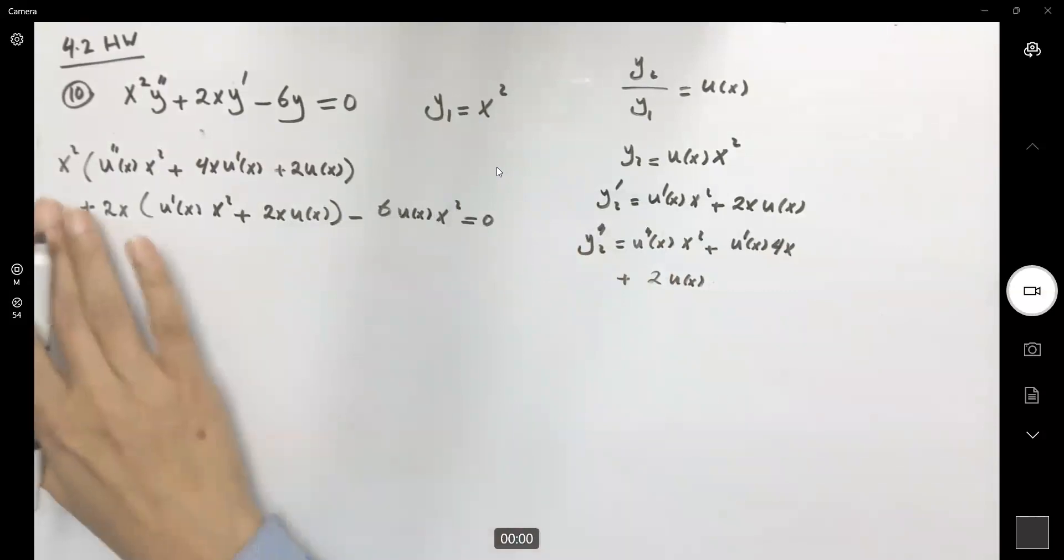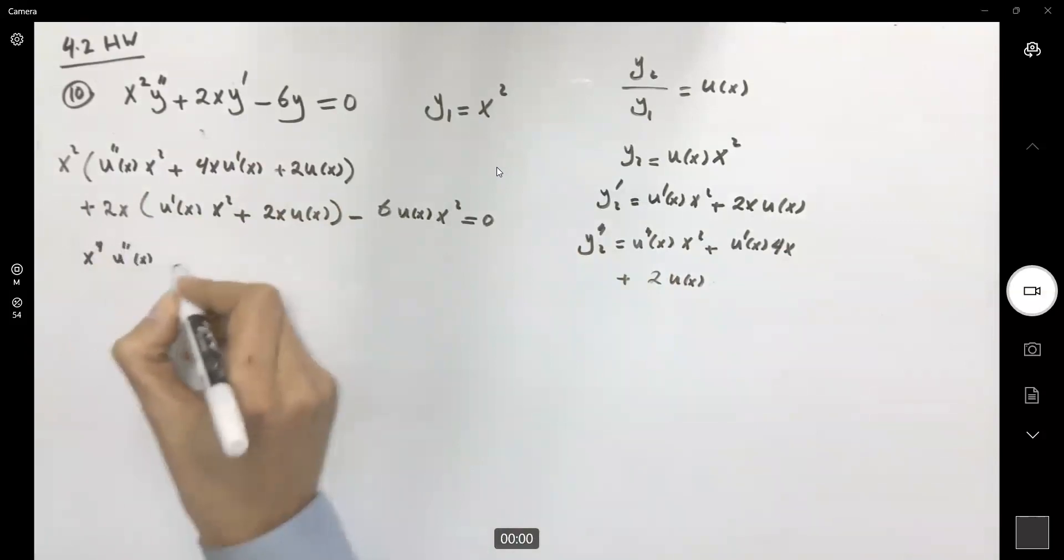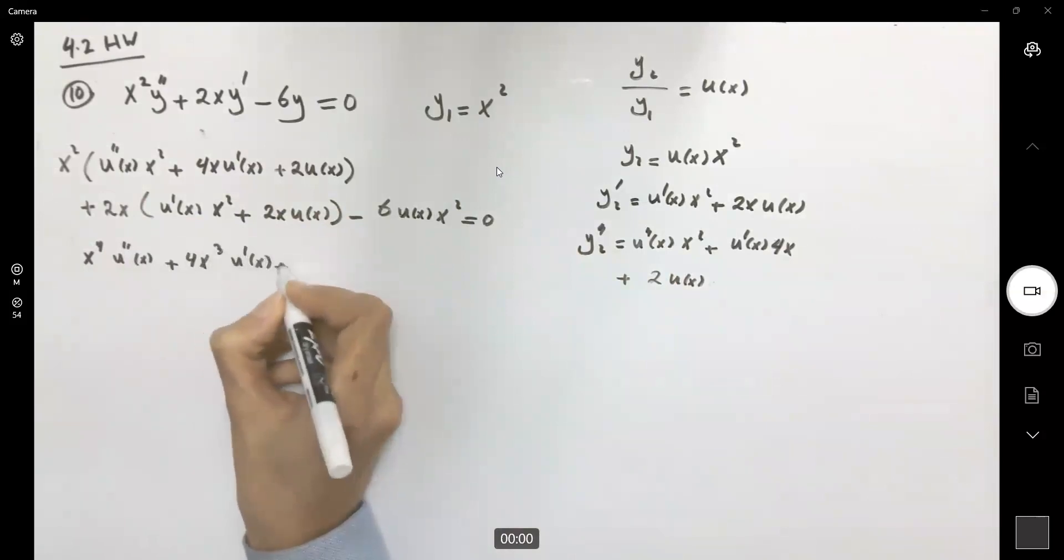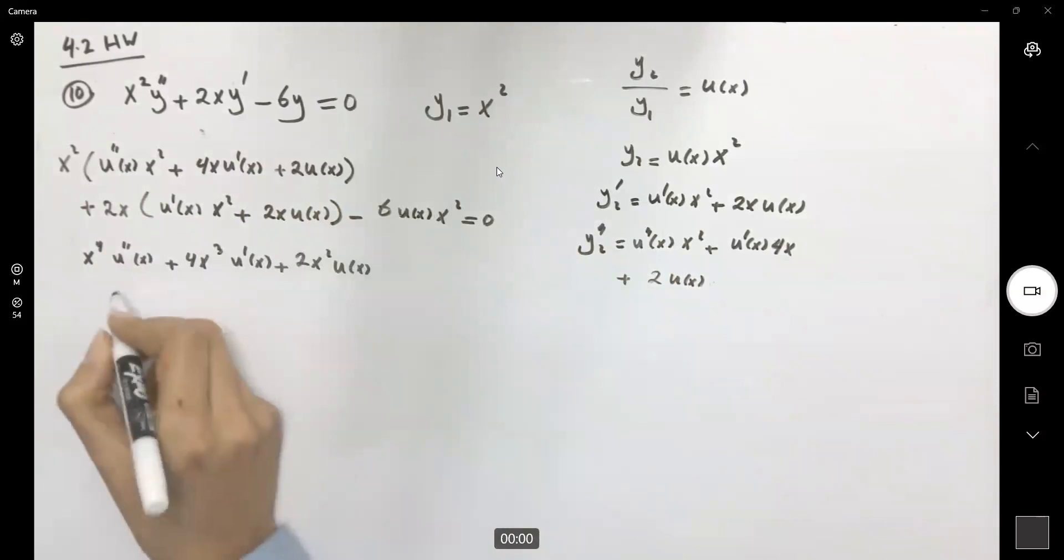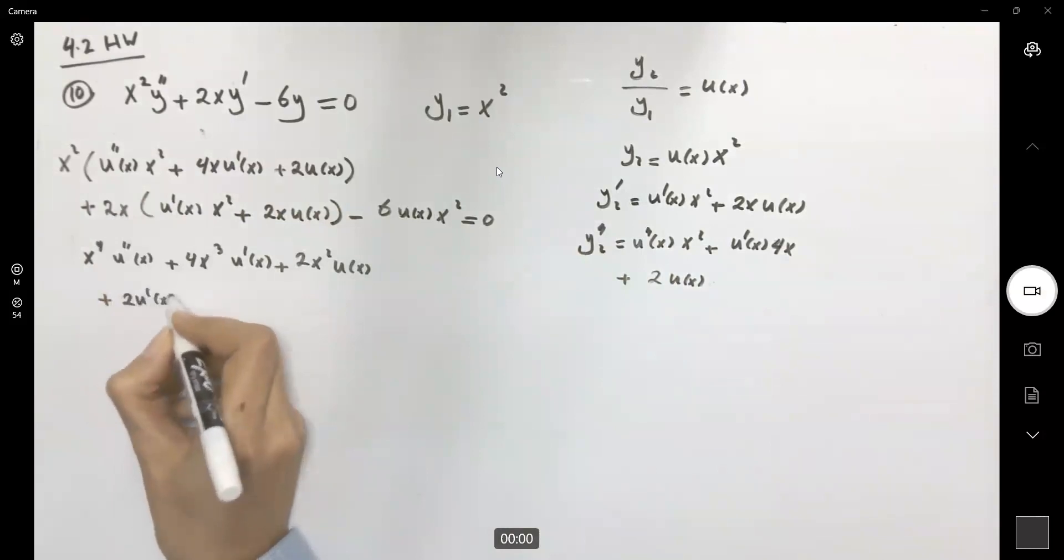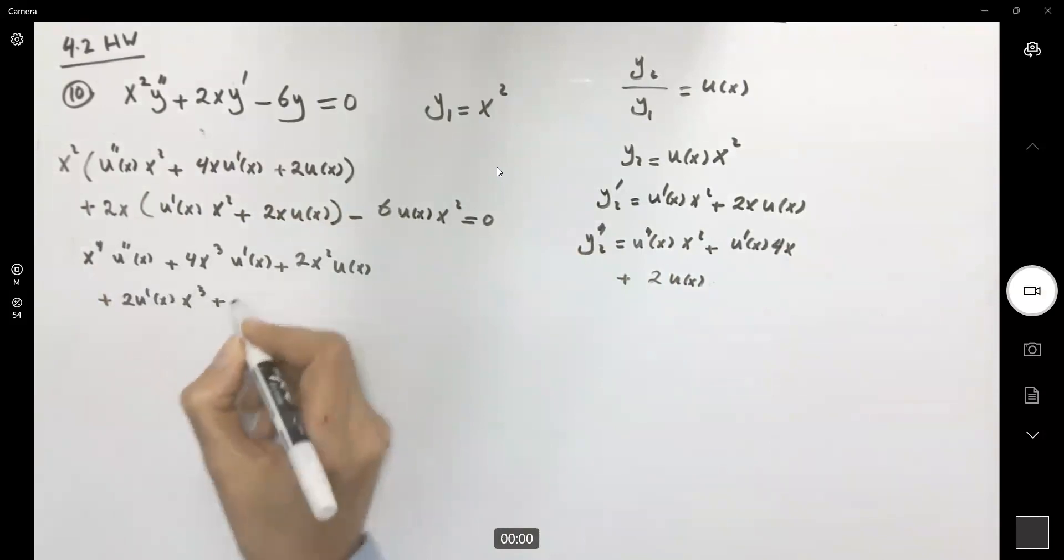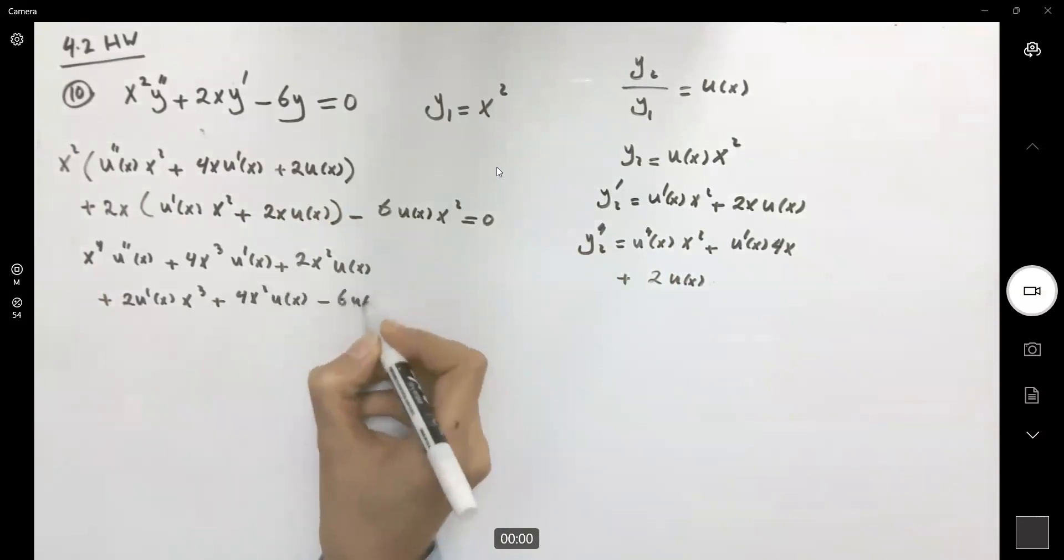Let's try to simplify this differential equation. We get x to the fourth, the second derivative of u, plus 4x cubed u prime of x plus 2x squared u of x plus... Now we distribute 2x into parentheses. We get 2 u prime of x times x cubed plus 4x squared u of x minus 6u times x squared equal to zero.